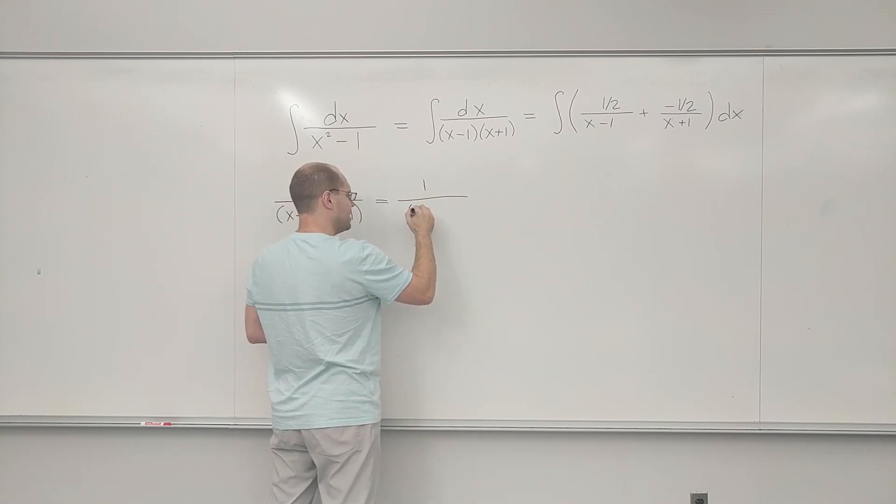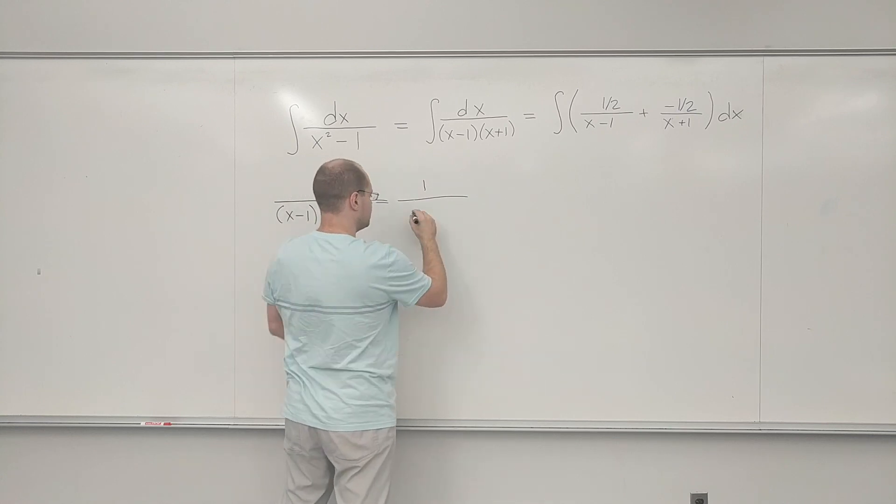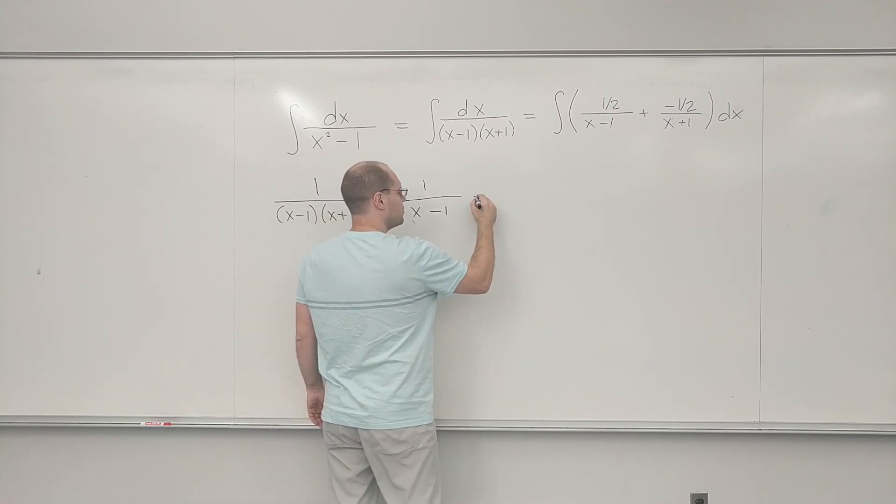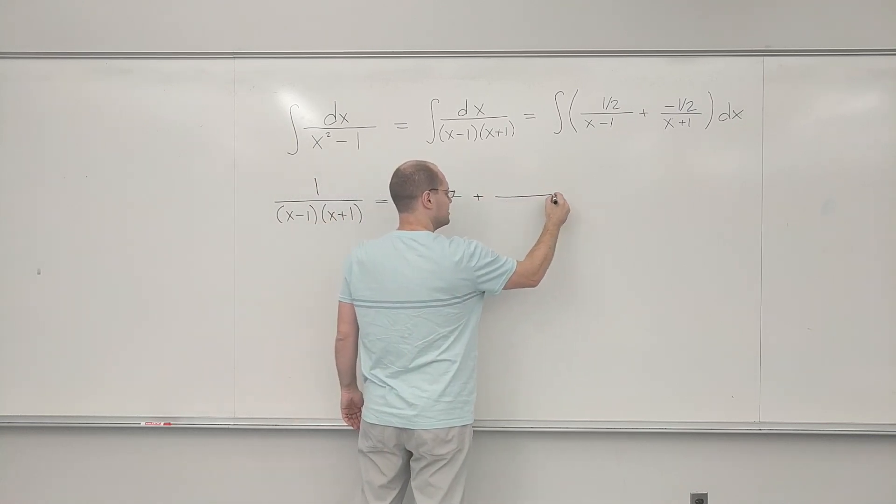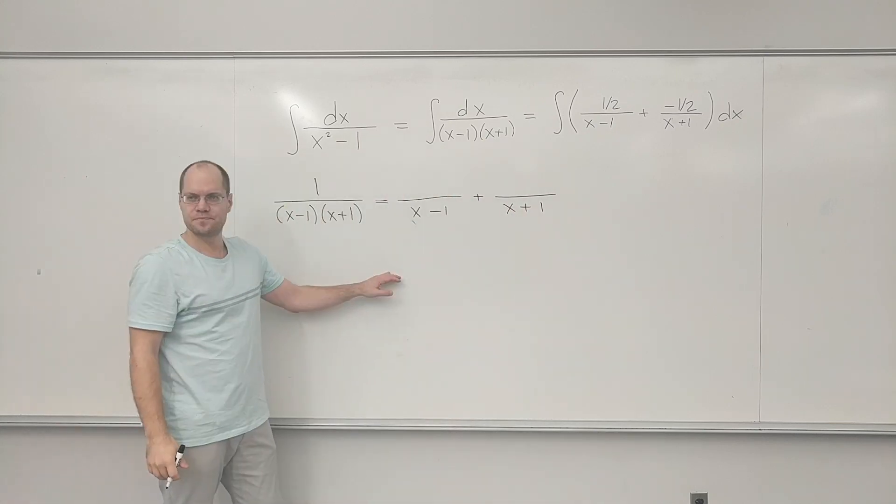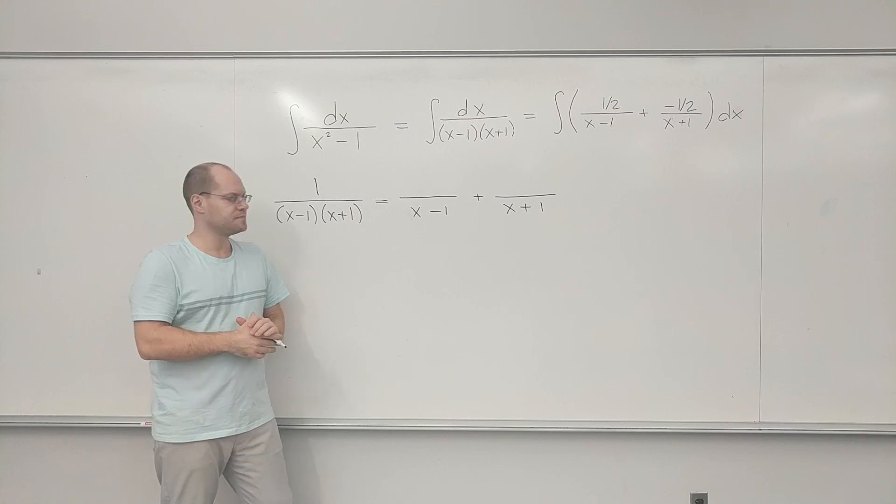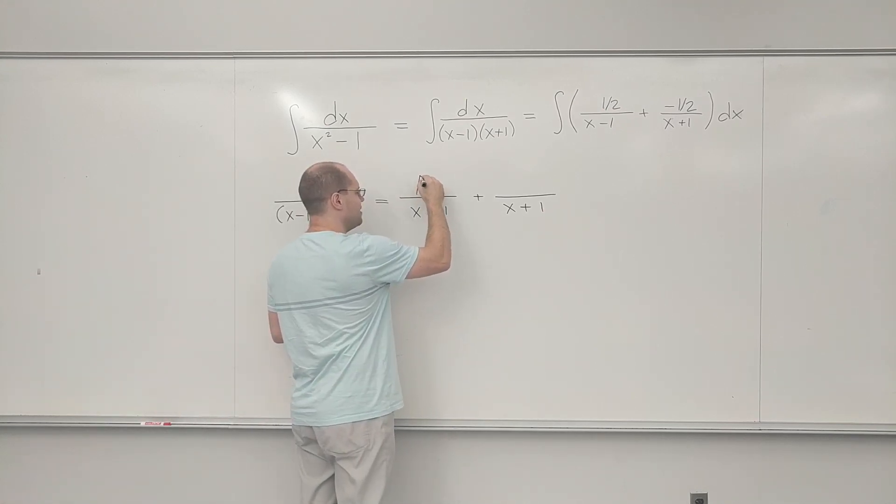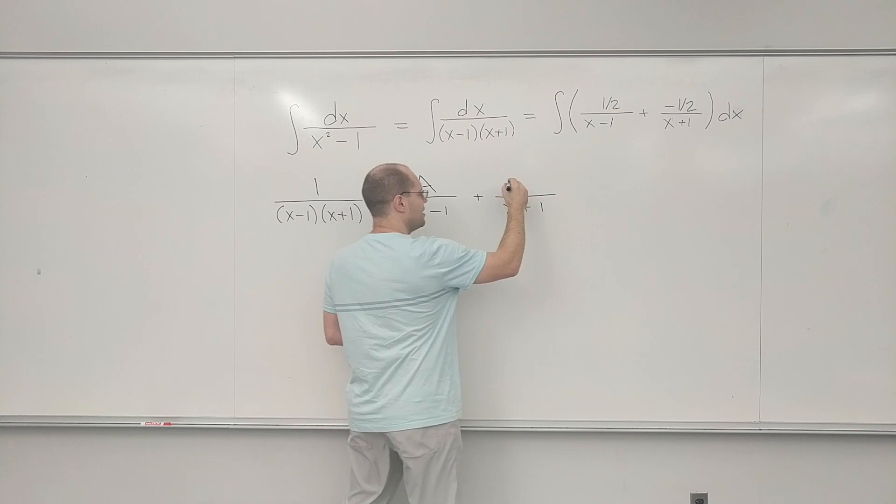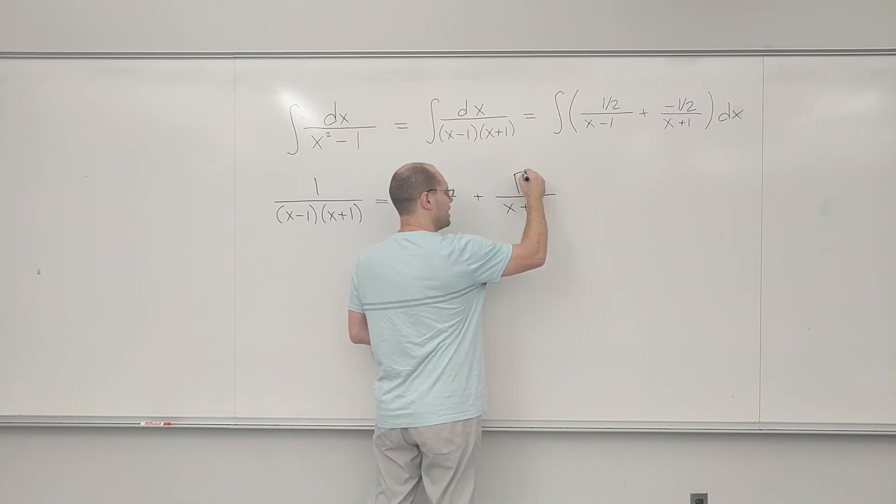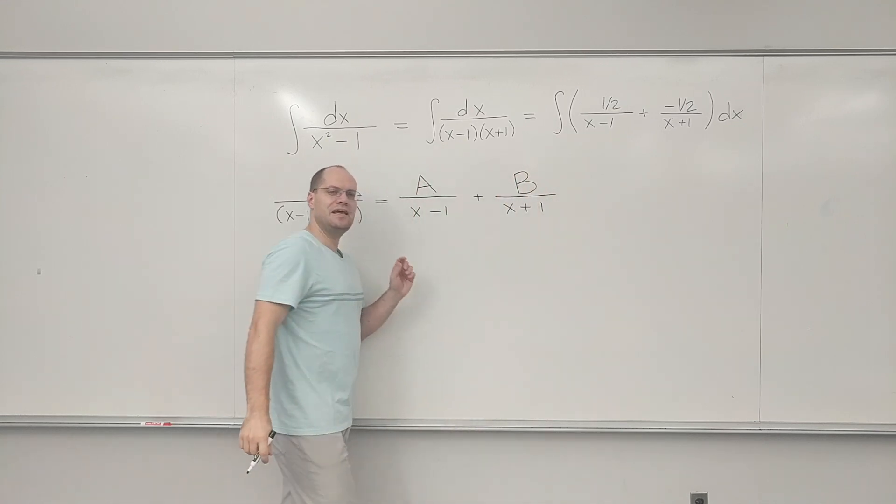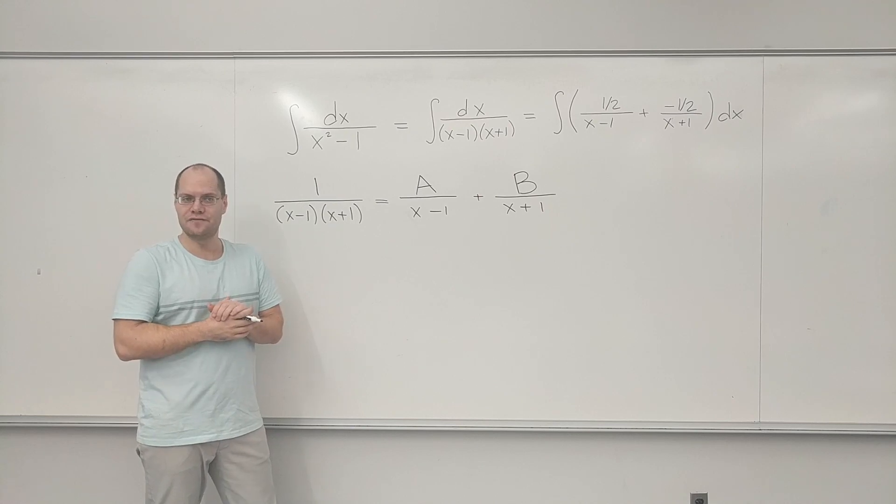One of them will have x minus 1 in the denominator, and the other one will have x plus 1 in the denominator. So right now, I don't know what's on top. So I will denote what goes on top here by A, and it's a constant, and what goes in the numerator here by B.